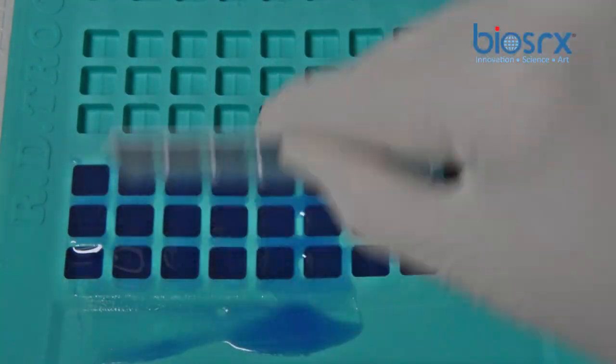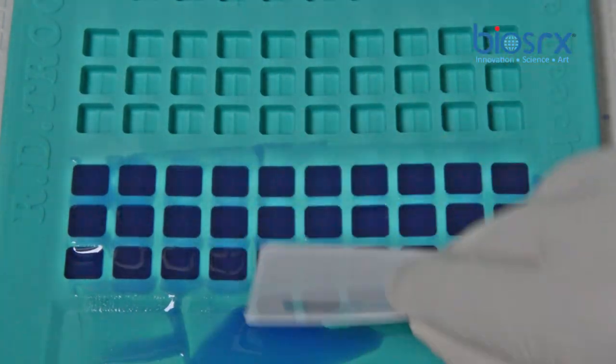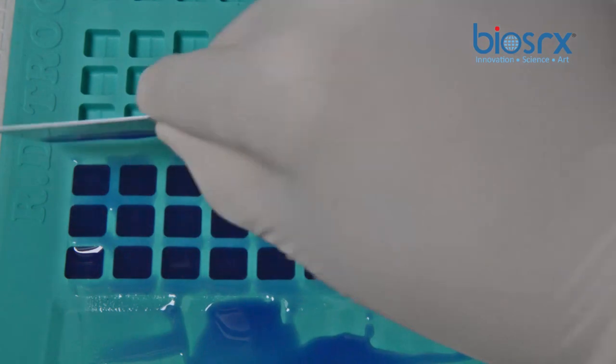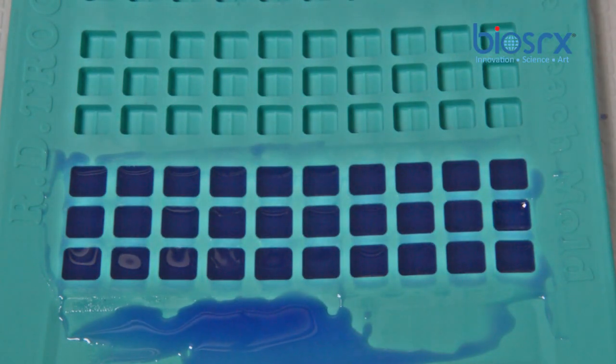One of the additional benefits for these RD trochee molds is the trough. The trough allows for clean removal of excess material when compounding multiple trochees at a time, something that most other competitors are unable to provide.